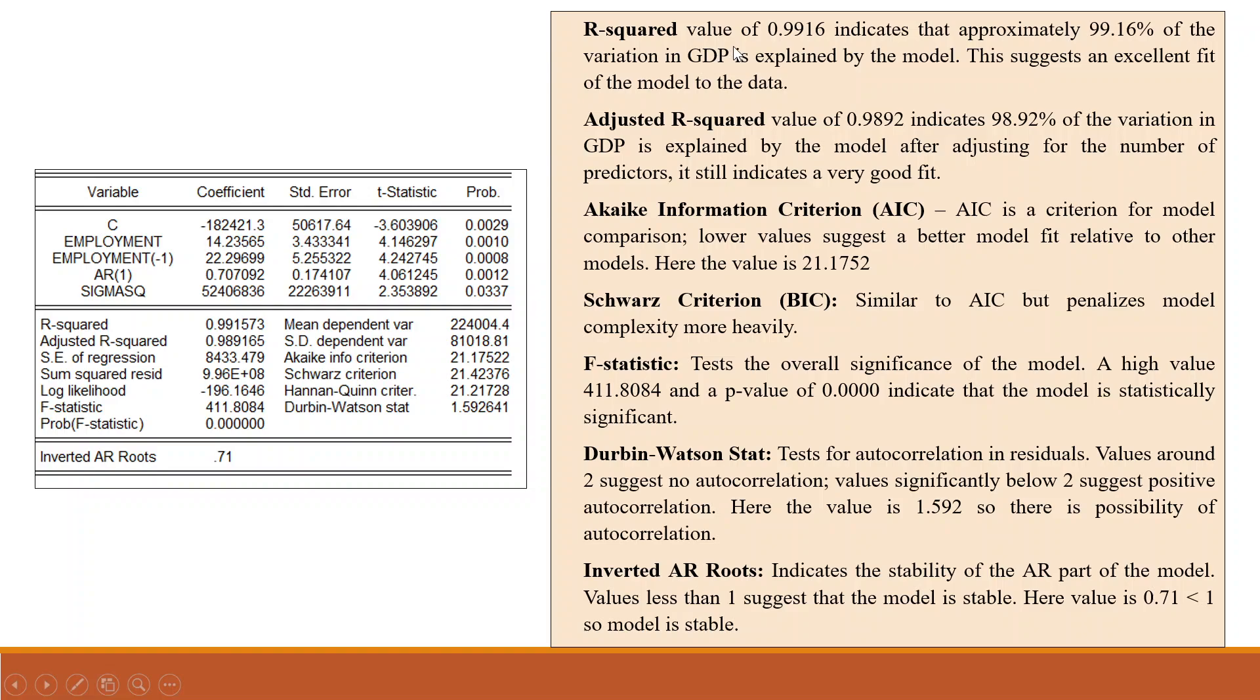R square value of 0.9916 indicates that approximately 99.16% of the variation in GDP is explained by the model. This suggests an excellent fit of the model to the data.